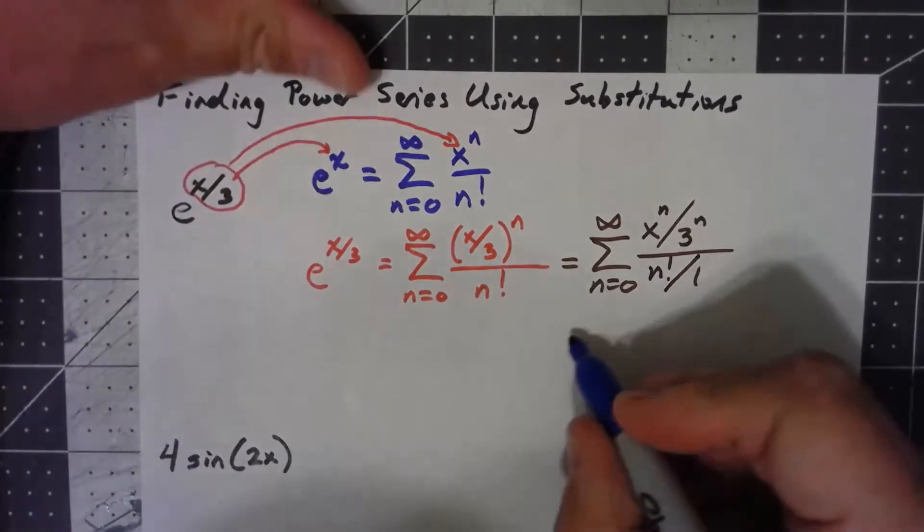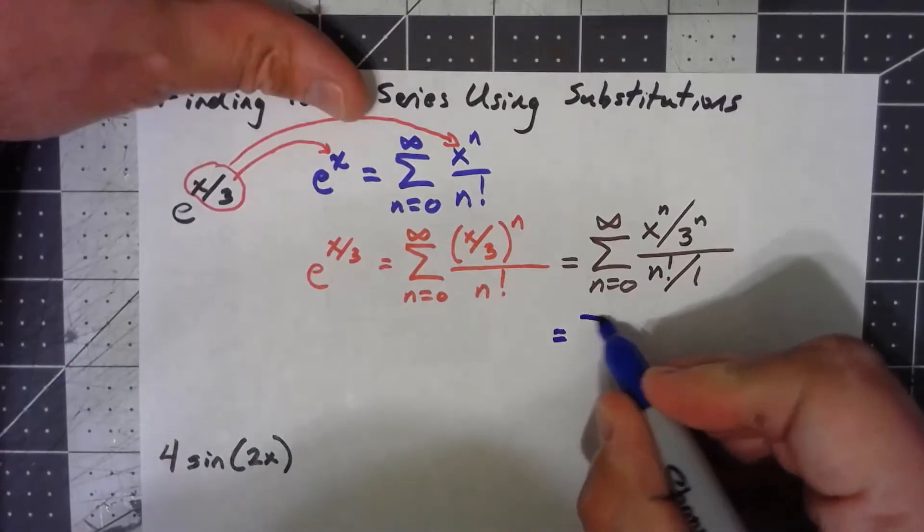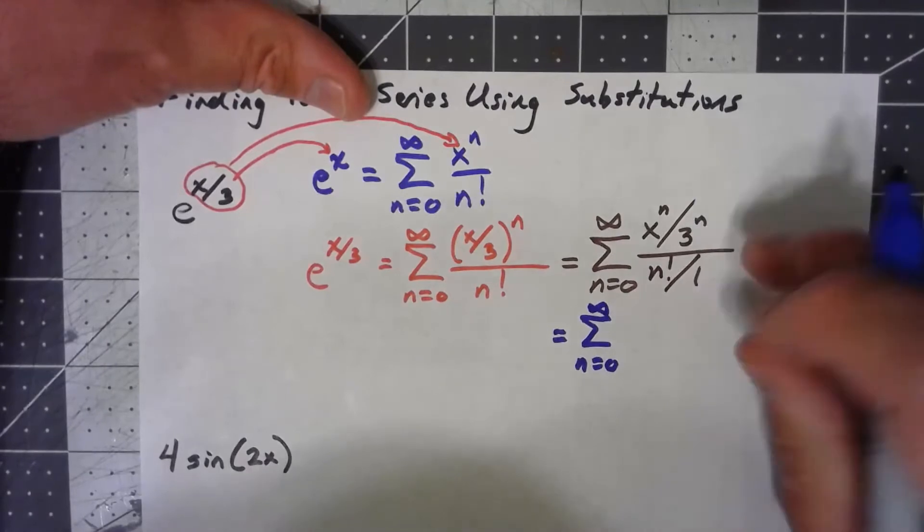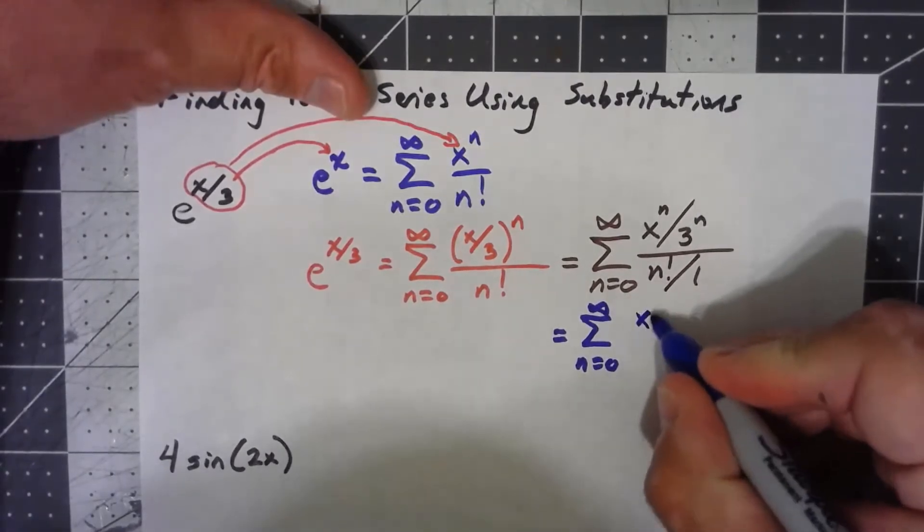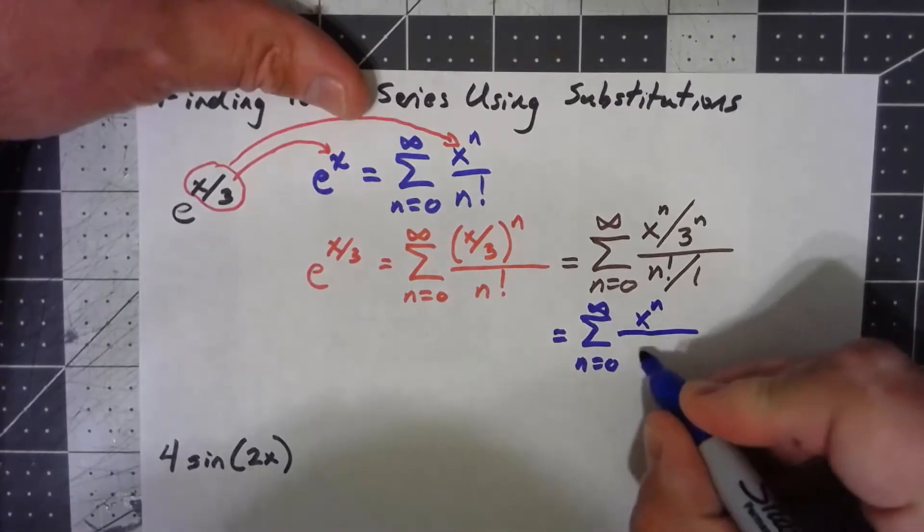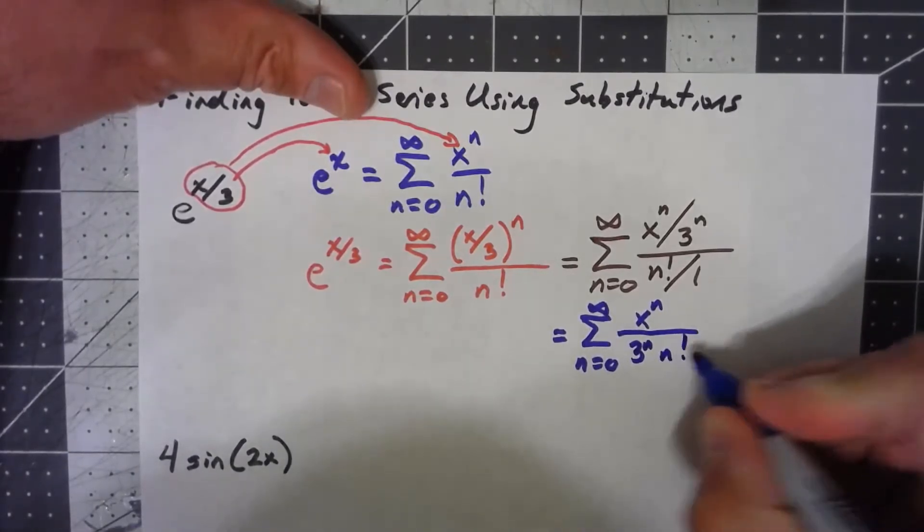And now I've got a fraction divided by a fraction, so I can invert and multiply. When I invert over, I'll get x to the n times 1, which is just x to the n. And on the bottom, I'll get 3 to the n times n factorial.